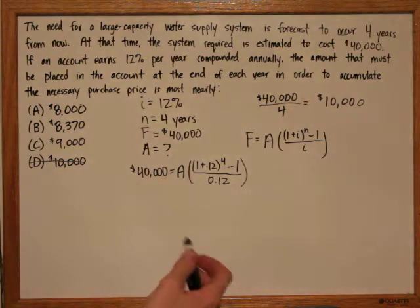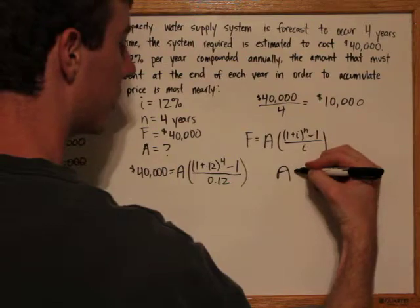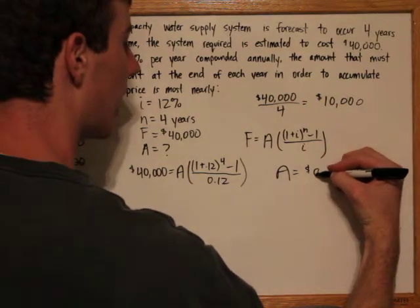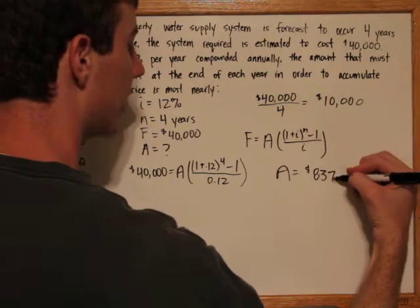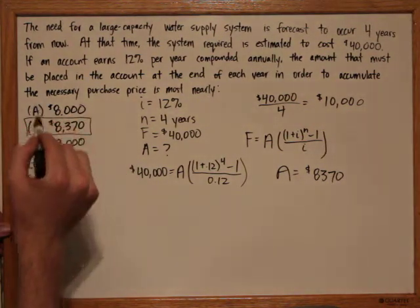And we can solve this problem using basic algebra. When we solve it, we get a value of a equals $8,370. So here, b is the correct answer.